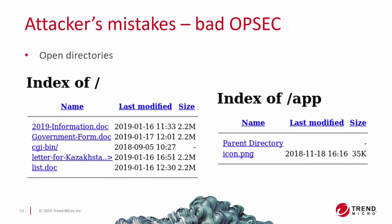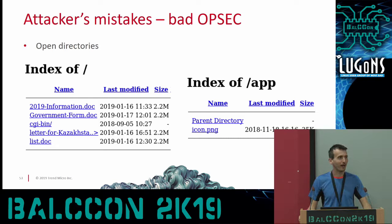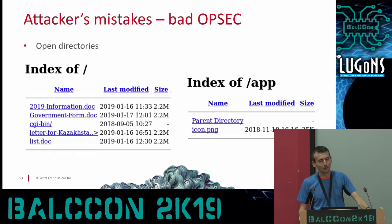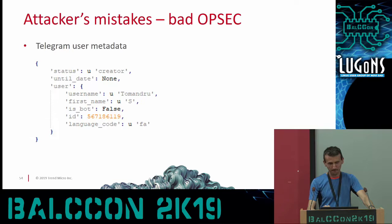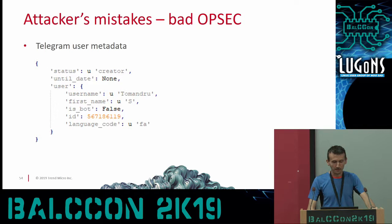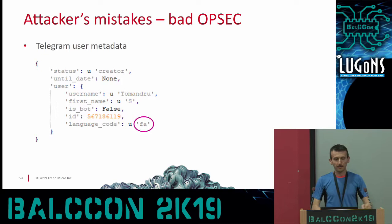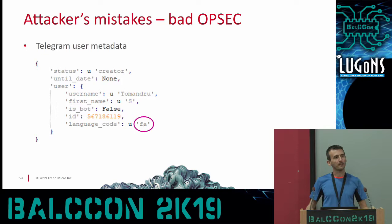Another mistake was open directories on their servers - sometimes going to a directory reveals lots of files which you can download and analyze. One more smaller mistake: they used Telegram, and the Telegram channel metadata showed the language code 'FA' for Farsi, which is spoken in Iran. Of course it could be a false flag, but it could also be a hint about where the threat actor is from because they forgot to change it to English.